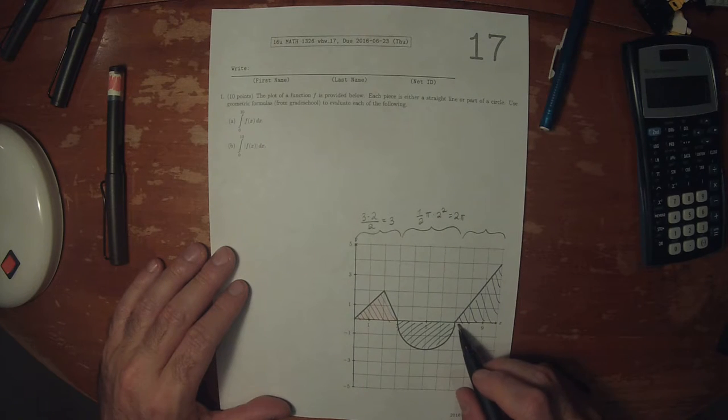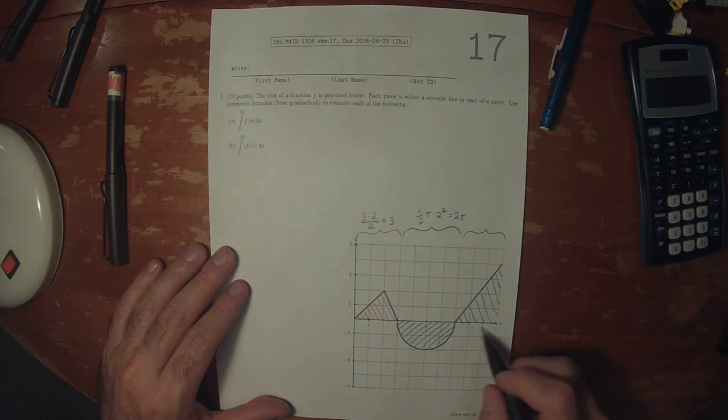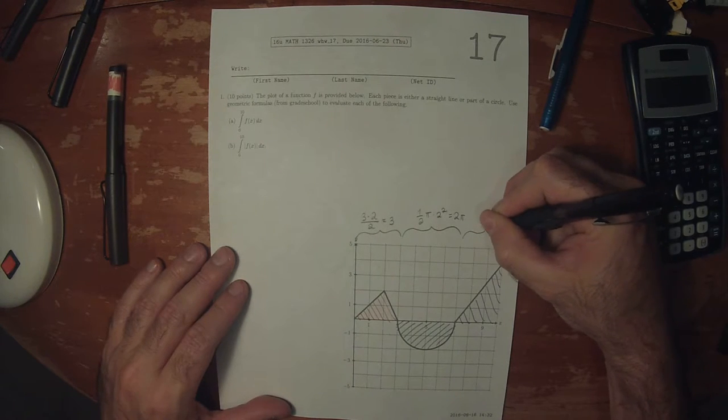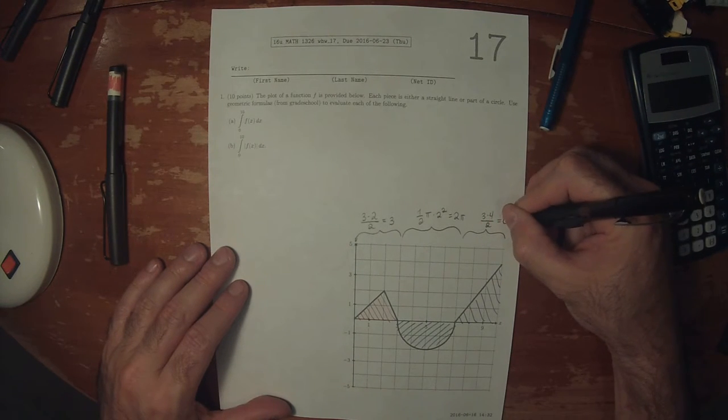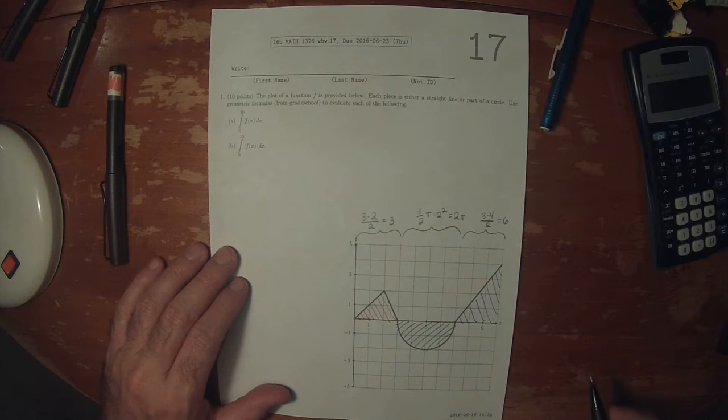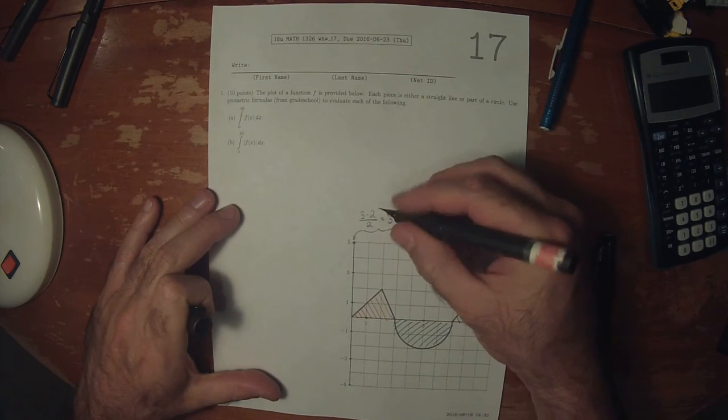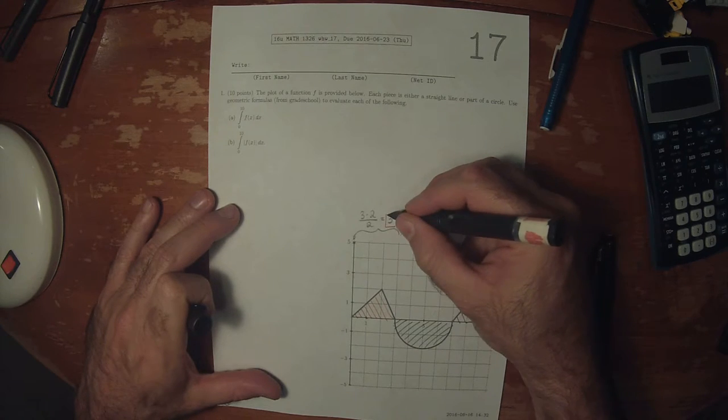And then this triangle is base times height, so that's three times four over two, so that's six. So those are the individual areas in the grade school reckoning.